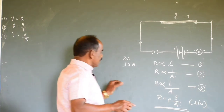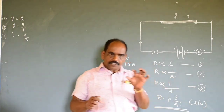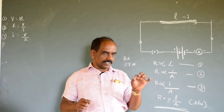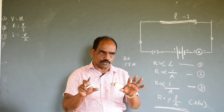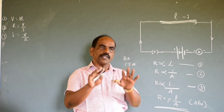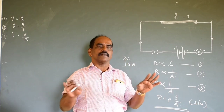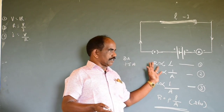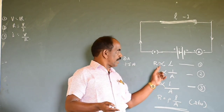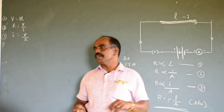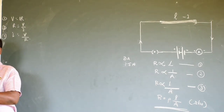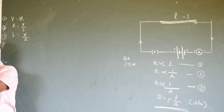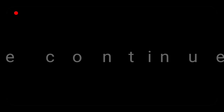So resistance is a property of the conductor to oppose the free flow of current through it. Resistance is a quality of the conductor, and it depends upon the quality of the conductor. We will continue to discuss where we get stuck.